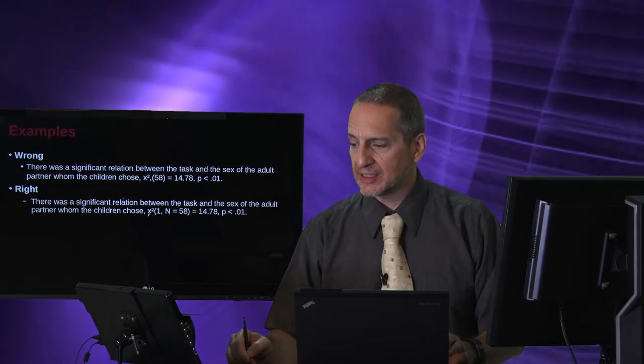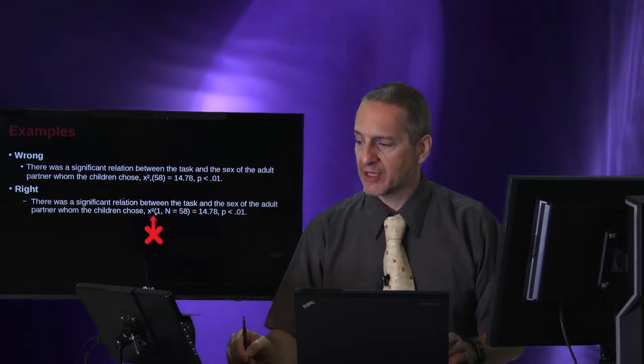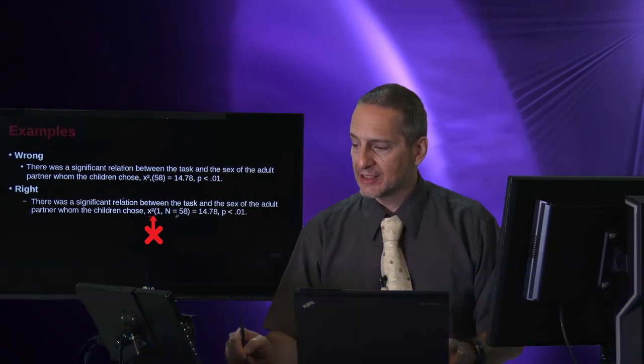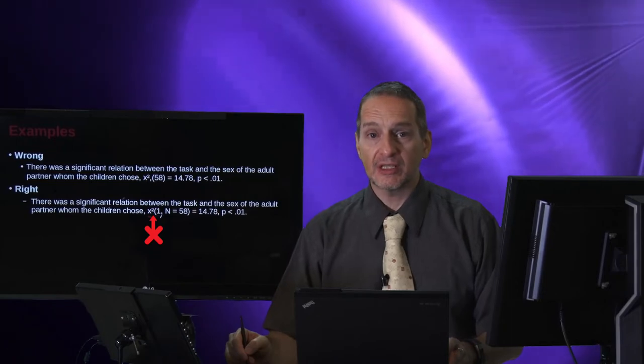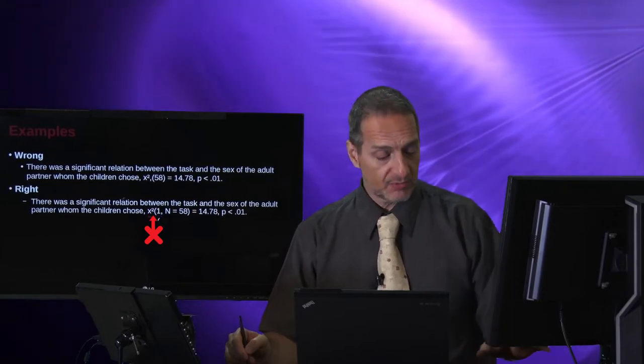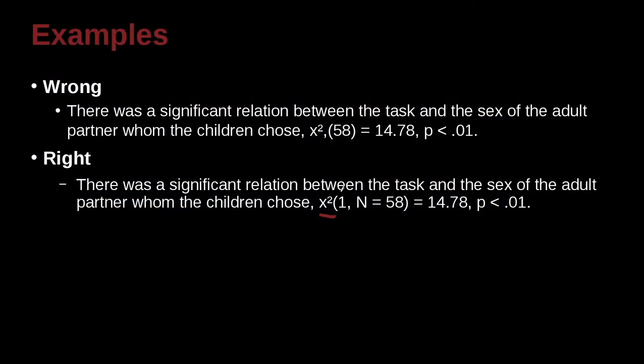This would be chi-squared, no space in here, and then one with the total sample of 58. So the degrees of freedom are going to be included inside the parentheses, and then the chi-squared result over here with the p, and that all looks good. It's this part here where we have the problem, the notation.